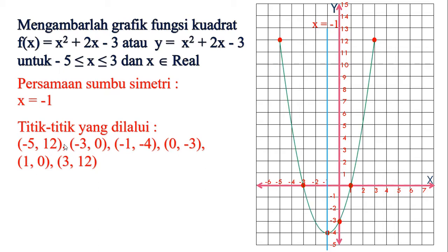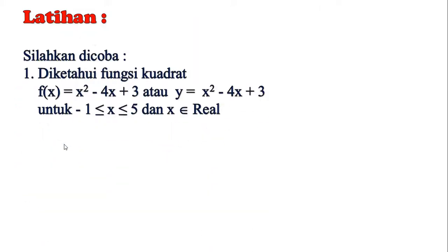Jadi beberapa titik yang dilewatinya. Sekarang perhatikan ini adalah grafik y sama dengan x kuadrat tambah 2x kurangi 3. Sekarang kita bisa mencoba, perhatikan satu soal saja. Kita punya fungsi f(x) sama dengan x kuadrat dikurangi 4x ditambah 3 atau fungsinya boleh kita tulis dalam bentuk y sama dengan x kuadrat kurangi 4x tambah 3. Intervalnya x-nya adalah dari negatif 1 sampai 5 untuk x-nya bilangan real.